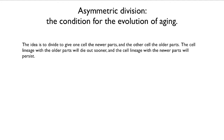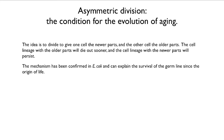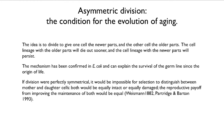The cell lineage with older parts will die out sooner, and the cell lineage with newer parts will live longer. This has been confirmed in Escherichia coli, the gut bacterium, and it can actually explain the survival of the germline since the origin of life. Basically, we are the descendants of all the cells that had younger parts over three billion years. If division were perfectly symmetrical, there wouldn't be any way of distinguishing between a mother and a daughter cell — both would have equal probabilities of survival, and the reproductive payoff from improving the maintenance of both would be equal. That would mean investment would be high in both, and we would not expect aging to evolve.